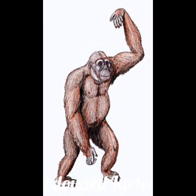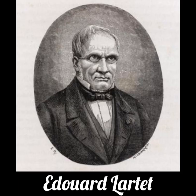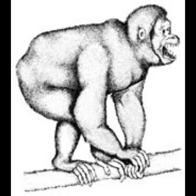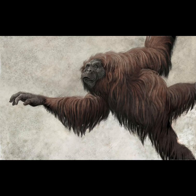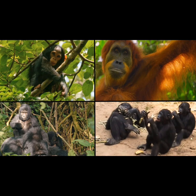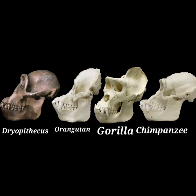Now with that out of the way, let's get into the topic at hand. The first on our list is Dryopithecus. Discovered in 1856 by French anthropologist Édouard Lartet, this ape lived in what is now Spain roughly 13 to 12 million years ago. Though not a direct ancestor to African apes, it was closely related to the lineage that would give rise to them. It possessed a mosaic of physical features that link it with both orangutans and African apes, as seen on this chart.